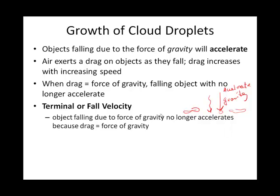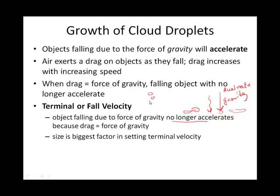Terminal velocity means a falling object under the influence of gravity will no longer accelerate beyond that point. The biggest factor, especially when we talk about little liquid water droplets falling within or from a cloud, is that the speed at which they fall — their terminal velocity — is most associated with their size.